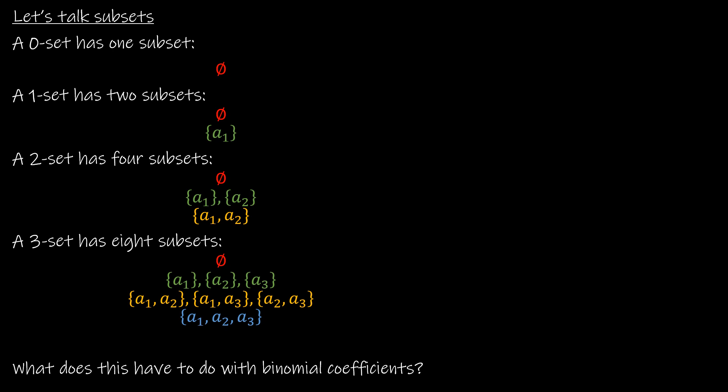If I have a zero set, I'm just talking about a set that is empty, and that zero set has only one subset, which is the empty set — which is, of course, the set itself. If I have a set with just one item, say my set is {1}, my subsets are either not choosing the one or choosing the one: the empty set, or {1}. If I have a two set, I can either not choose any values, choose the first value, choose the second value, or choose both. So it has four subsets.